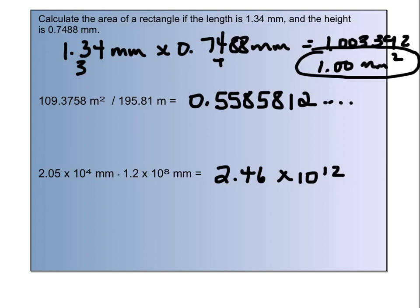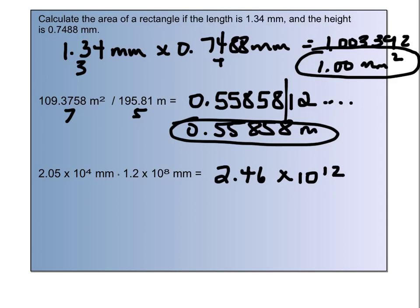In the next one, 109.3758 meters squared divided by 195.81 meters gives us a decimal. We have seven significant figures versus five, so we go with five. Rounding there gives us 0.55858 meters. Meters squared divided by meters — one meter cancels — leaving just meters. Then 2.05 times ten to the fourth millimeters times 1.2 times ten to the eighth millimeters. We get an answer in scientific notation from our calculators. We have three significant figures versus two, so we round to two: 2.5 times ten to the twelfth. Millimeters times millimeters is millimeters squared.